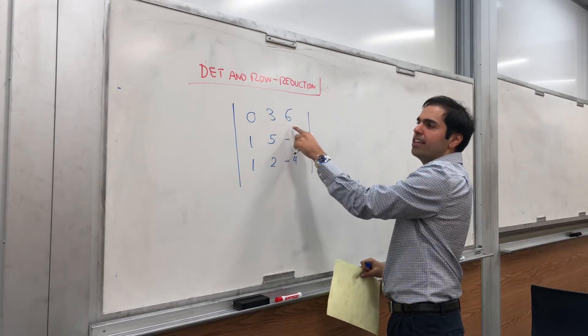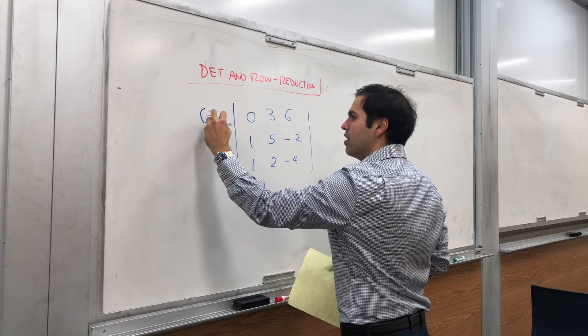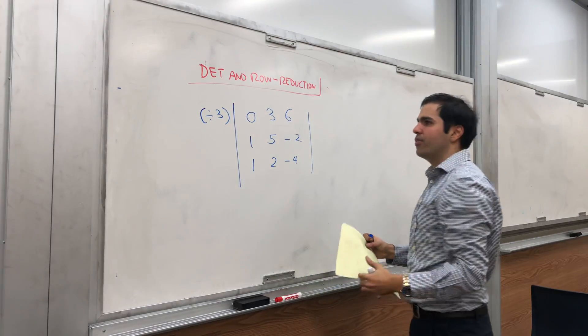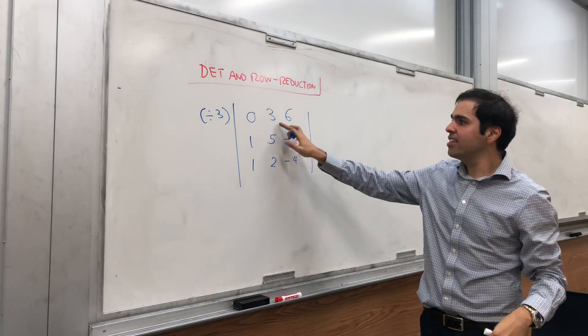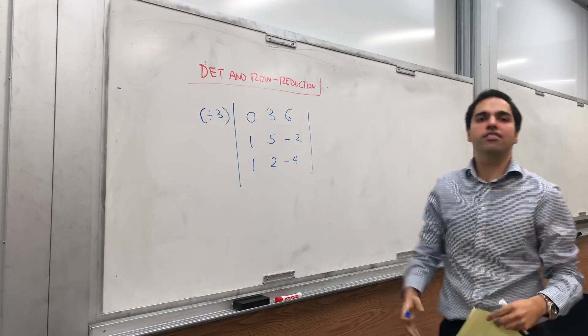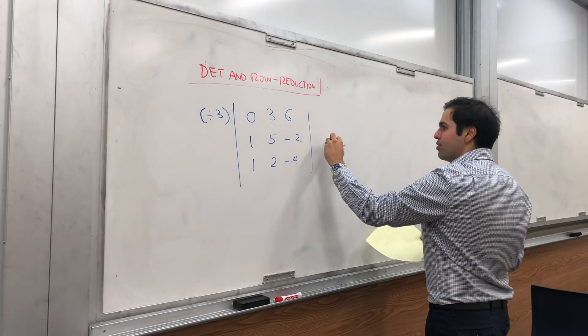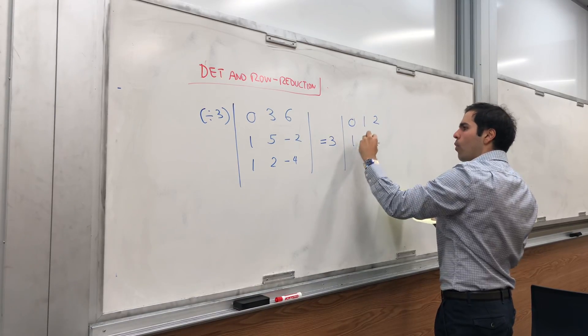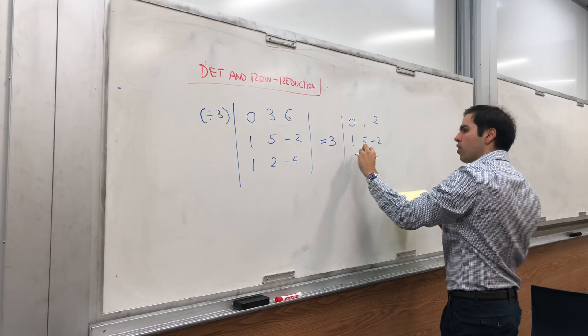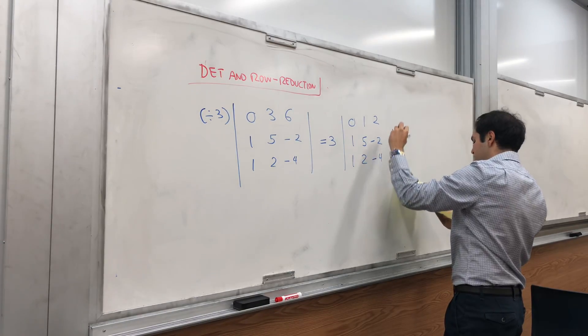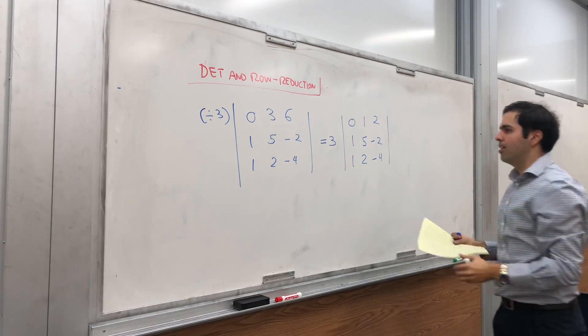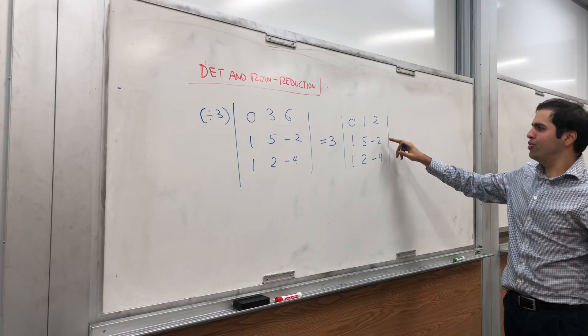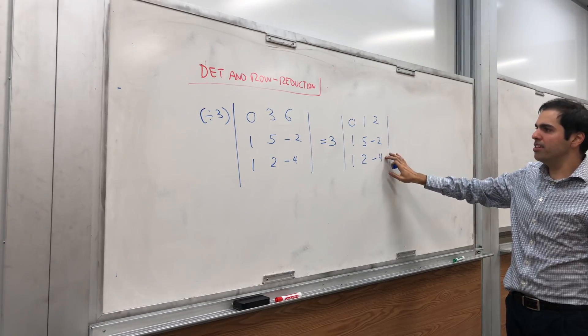Notice we can divide this row by 3, and what the determinant does is just pull out this 3 from the determinant. So this becomes 3 times the determinant of 0 1 2, 1 5 -2, 1 2 -4. And that's what happens if you multiply a row by a certain number.